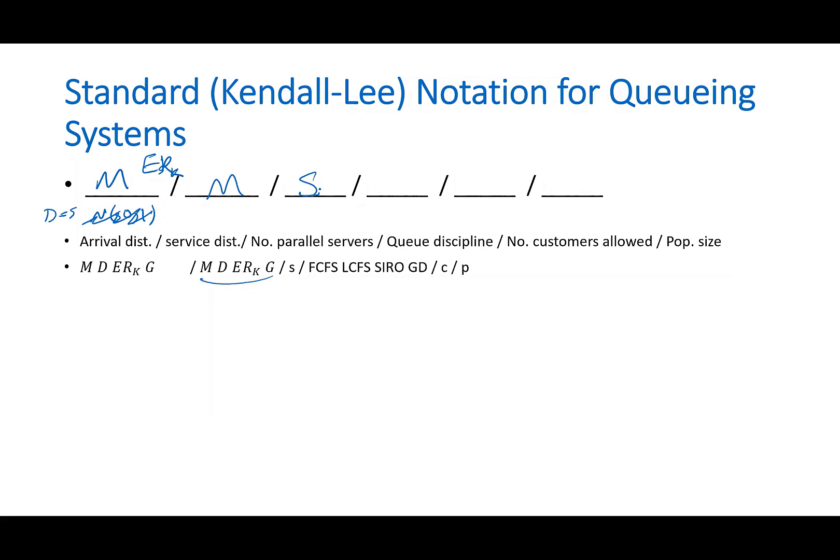And then the next character is the queueing discipline that we learned about. It's basically how do we choose people from the line? How do we serve people? In what order? First-come, first-serve, last-come, first-serve, select in random order, or general discipline. General discipline means could be anything. It's not limited to a specific discipline.